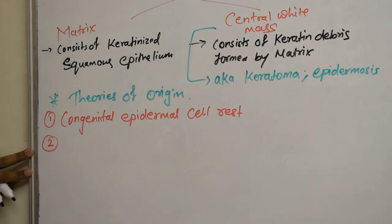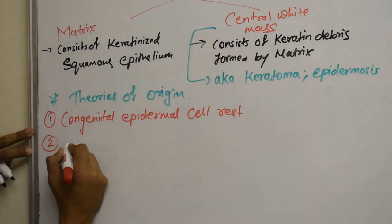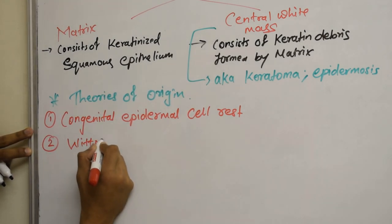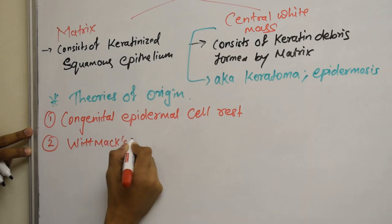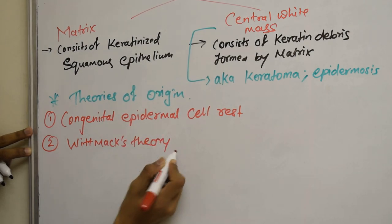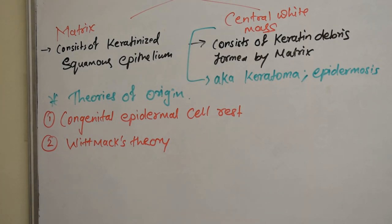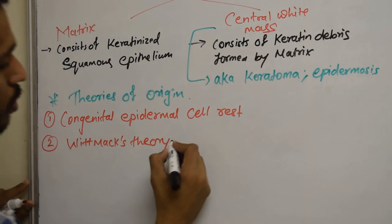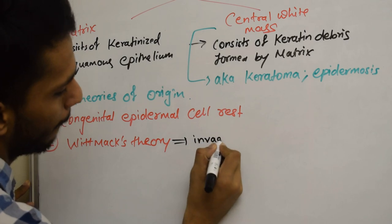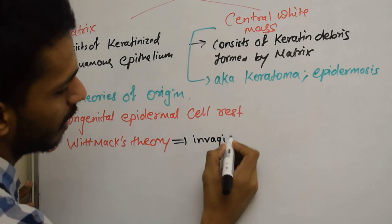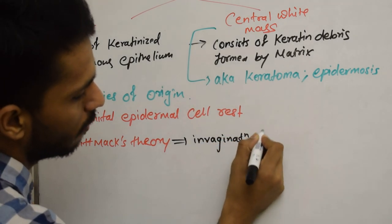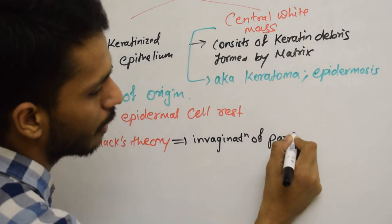The second theory is called the Wittmaack theory, which says that Cholesteatoma occurs due to invagination of the pars flaccida. Pars flaccida is a part of the tympanic membrane.